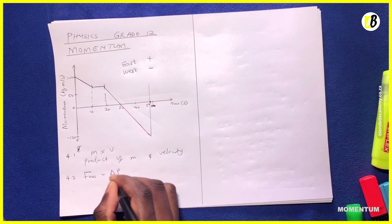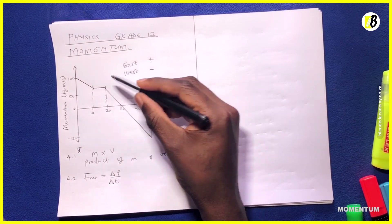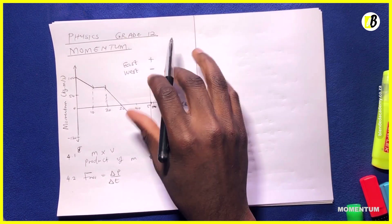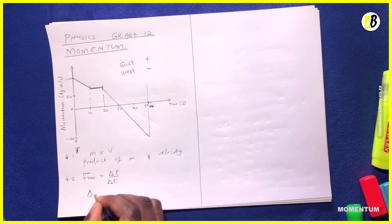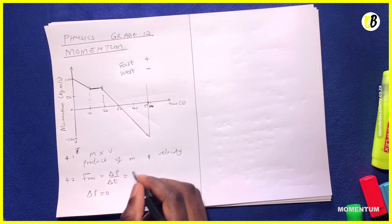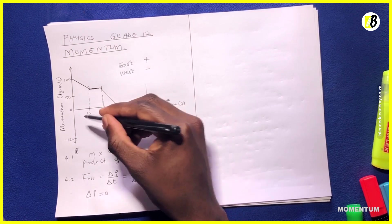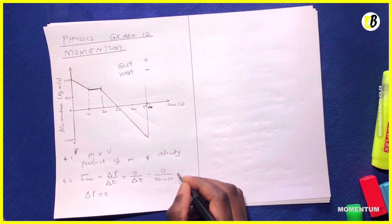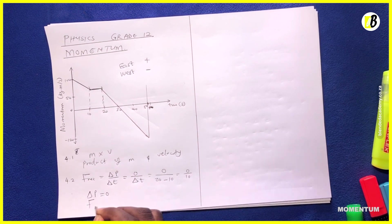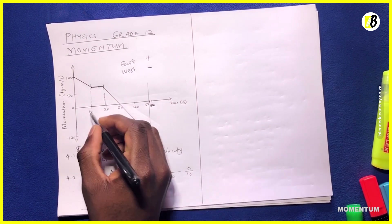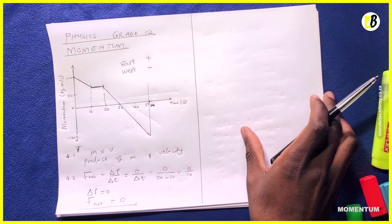Remember net force is given by the change in momentum divided by the change in time. As you can see, the change in momentum is zero between these two points because there's no change in momentum — we just have a straight horizontal line there. The gradient of this line is zero, which means the change in momentum is zero. So we get zero divided by the change in time: zero divided by (20 − 10) = zero divided by 10 = zero. Therefore the net force equals zero between t10 and t20 seconds.